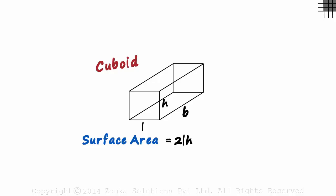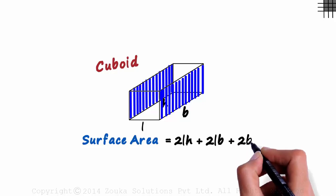Similarly, the sum of the areas of the faces at the top and bottom together will be 2LB, and the sum of the areas of the faces on the right and left will be 2BH.